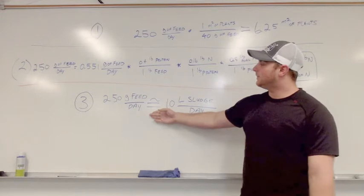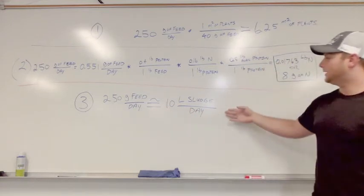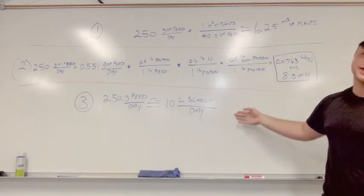Finally, equation three. This isn't really our nitrogen balance—it's more our flow per day. With 250 grams of feed per day, we get 10 liters of sludge per day, and that's what our system works with.